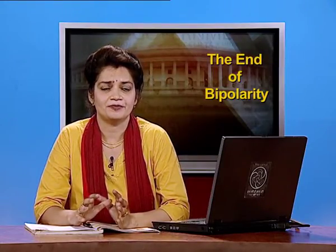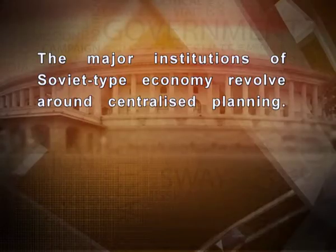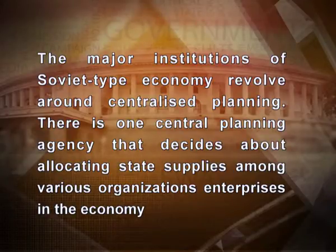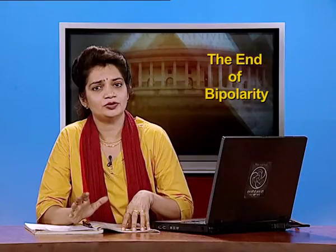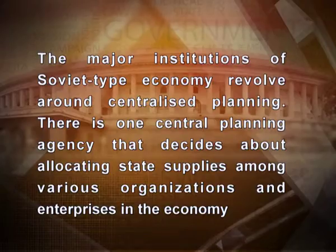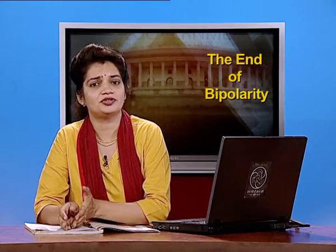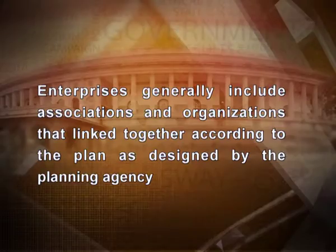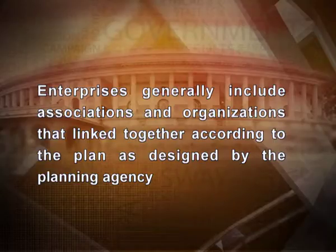The major institutions of Soviet-type economies revolve around centralized planning. There is one central planning agency that decides on allocating state supplies among various organizations and enterprises in the economy, and plans how enterprises engaged in production and delivery of goods and services are related to one another. These enterprises include associations and organizations linked together according to the plan designed by the planning agency.